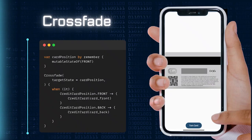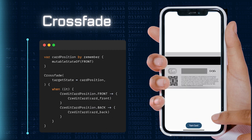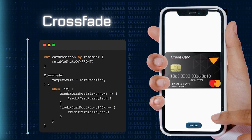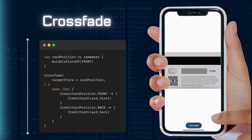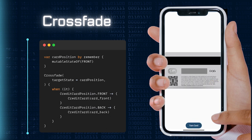To get a feel for CrossFade, think of it like a magic flip of a credit card. We will make it show its front and back side just by tapping a button. It's a simple way to make things look fancy.